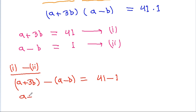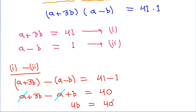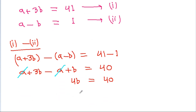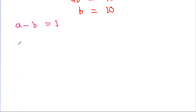Subtracting equation 2 from equation 1: (a + 3b) - (a - b) = 41 - 1, which gives -3b + b... simplifying, we get 4b = 40, so b = 10. From equation 2, a - b = 1, so a = b + 1 = 10 + 1 = 11.